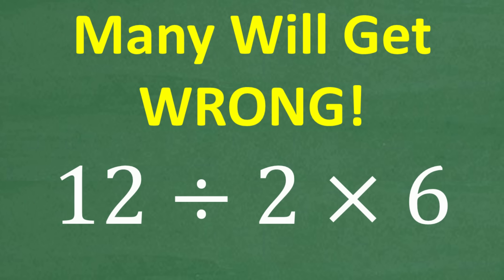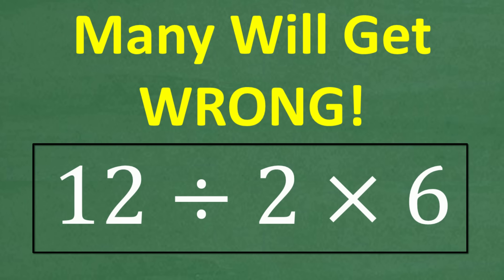A lot of people that think they understand basic math are actually going to do this simple math problem wrong. The only rule here is no calculator. Let's go ahead and take a look at the question. We have 12 divided by 2 times 6. What is the answer?